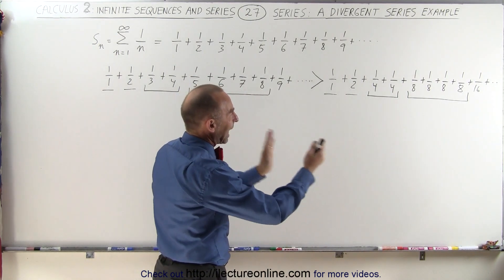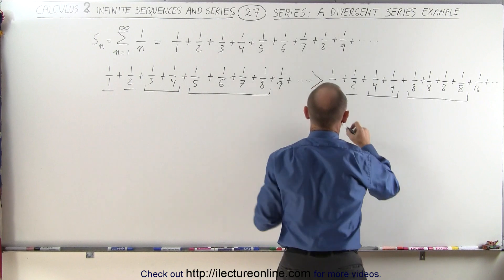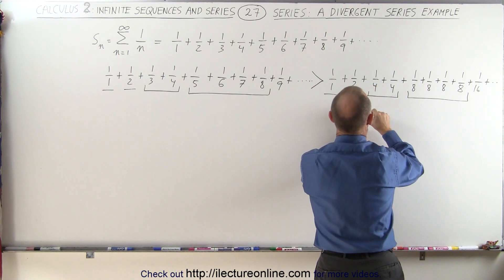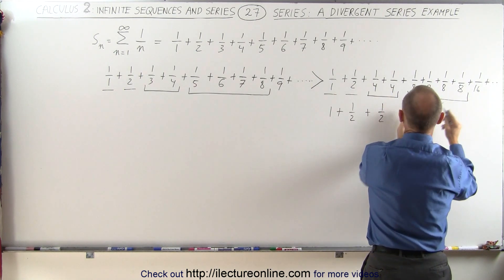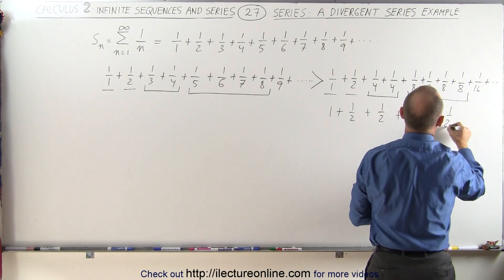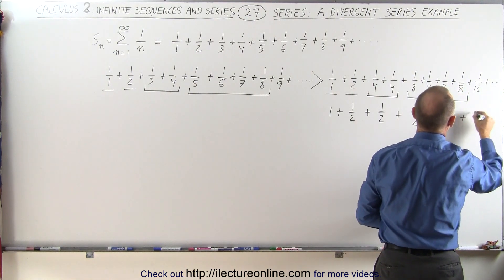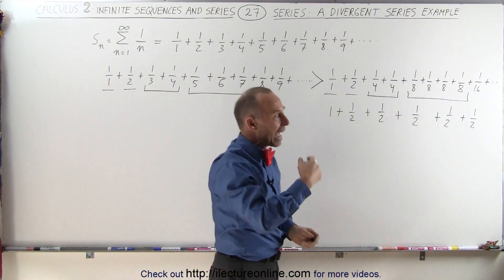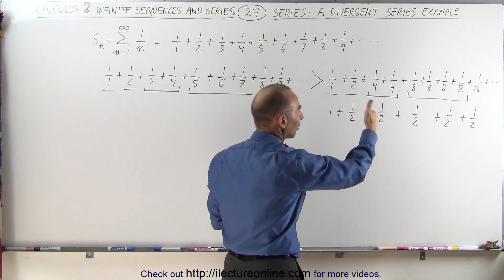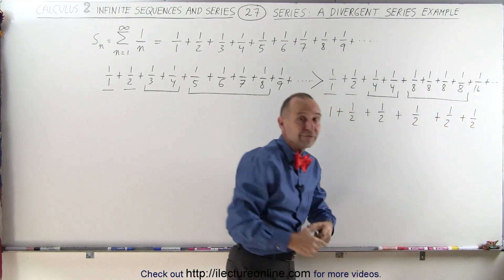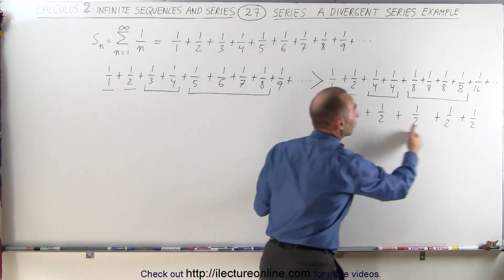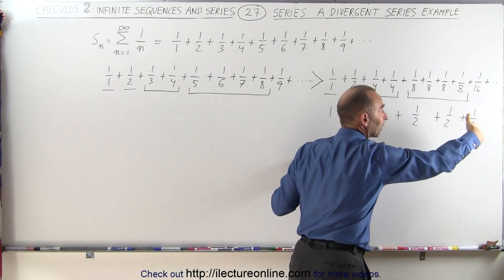What happens now is when I start adding the right side together, I end up with 1 plus 1 half. When I add those two together I get plus 1 half. When I add those four together I get 1 half. When I add the next 8 together I get 1 half. When I add the next 16 together I get 1 half. You can see that as I continue adding more and more terms on the right side, I simply get 1 plus 1 half plus 1 half plus 1 half plus 1 half, out to infinity forever.